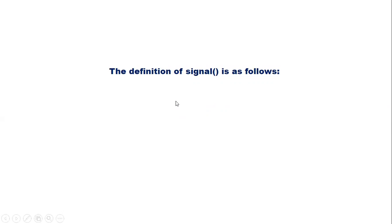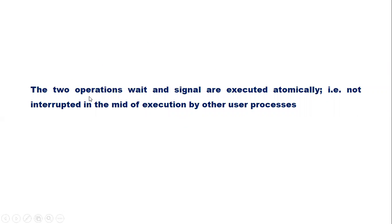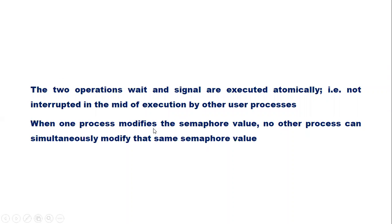The definition of signal is as follows: it simply increments the value of S by one. The two operations, wait and signal, are executed atomically — that is, they are not interrupted in the midst of execution by other user processes. When one process modifies the semaphore value, no other process can simultaneously modify that same semaphore value.